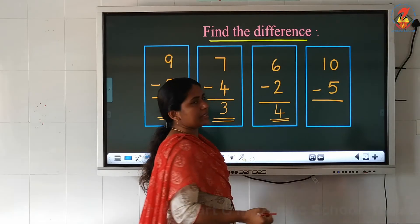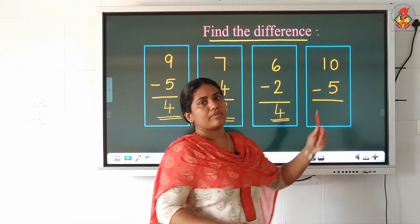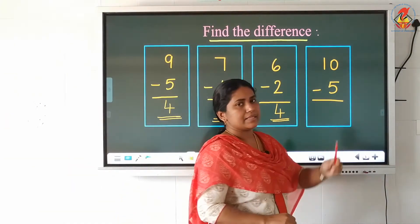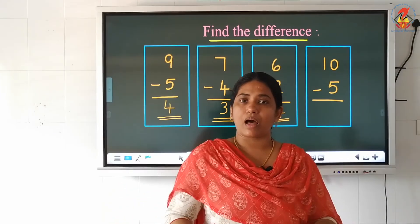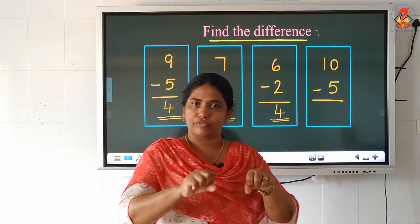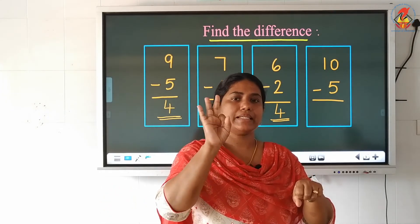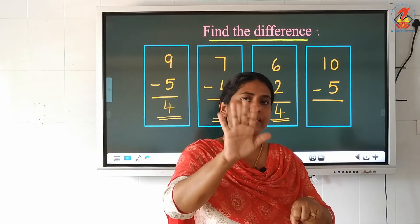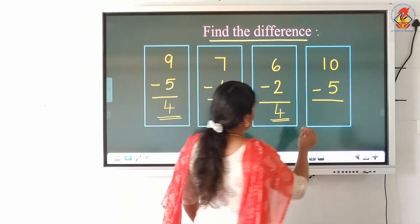Now look at the last question: 10 minus 5. Which is the small number? 5 is the small number. So we will start counting after the small number. After 5: 6, 7, 8, 9, 10. How many fingers did I raise? 5 fingers. So 5 is our answer.